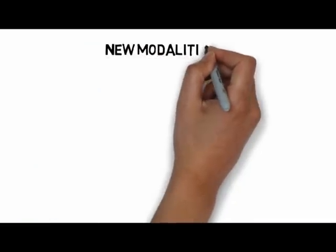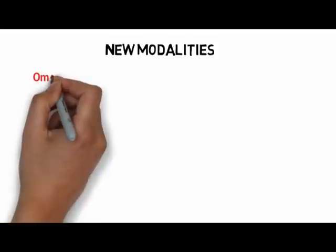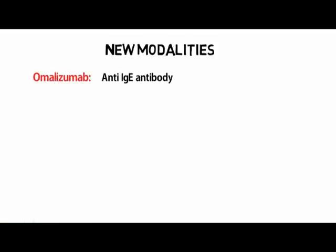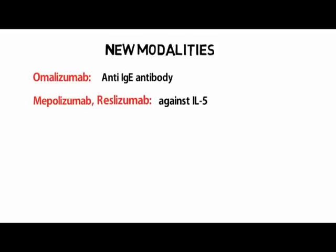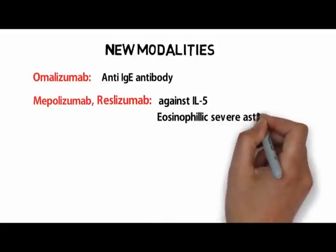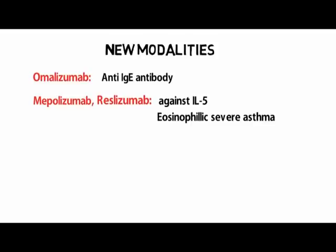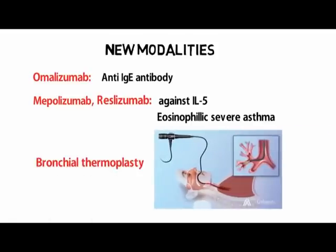For patients inadequately controlled on high-dose inhaled glucocorticoids and LABA, anti-IgE therapy with omalizumab may be considered if there is objective evidence of sensitivity to a perennial allergen and serum IgE is within the established target range. Monoclonal antibodies like mepolizumab and reslizumab targeting IL-5, a potent chemoattractant for eosinophils, are indicated for severe eosinophilic asthma poorly controlled with conventional therapy. Bronchial thermoplasty, a device-based intervention using thermal energy applied via fiber-optic bronchoscope to impair bronchial smooth muscle contractility, is another new modality, though its role in managing severe asthma is still not fully clear.